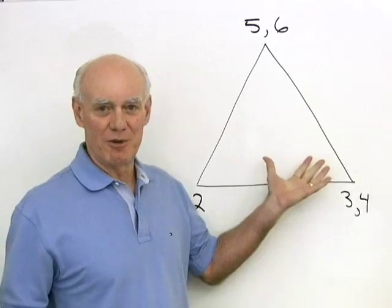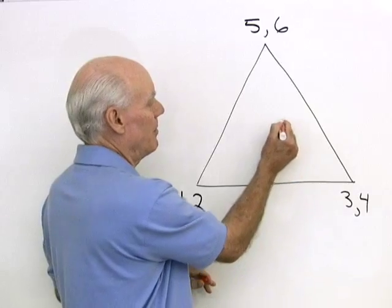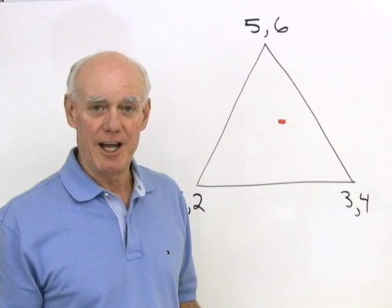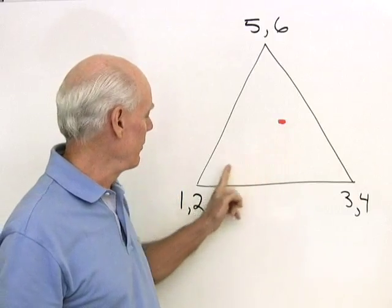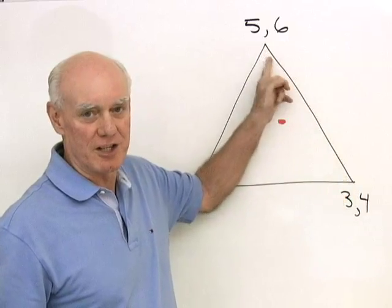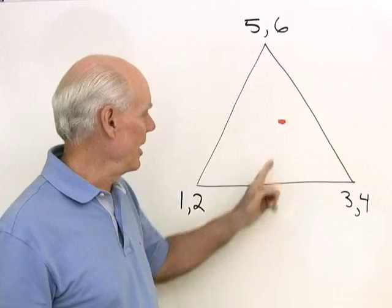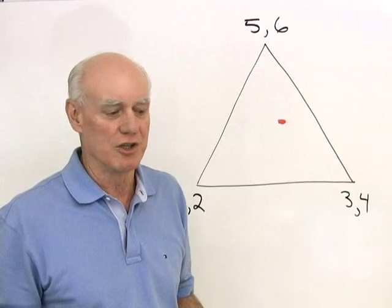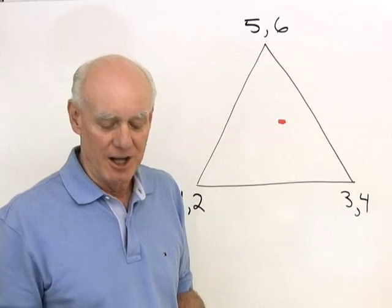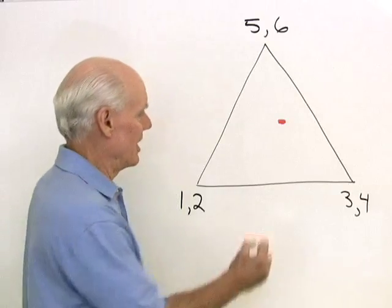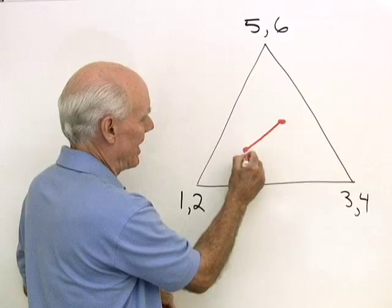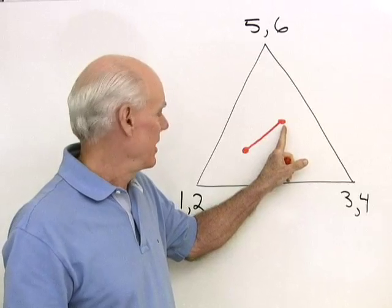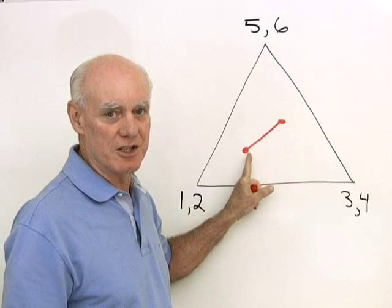Here I have a nice equilateral triangle. I'm going to start this chaos game by picking any point whatsoever inside this triangle — it doesn't matter where we start. Then I'm going to roll the die, and depending on what number comes up, I'm going to move halfway to one of the three vertices. So if I roll and it comes out 1, I move halfway to that vertex and stop. I roll again, it comes out 2, so I start here and move halfway to that vertex and stop. That's my output.